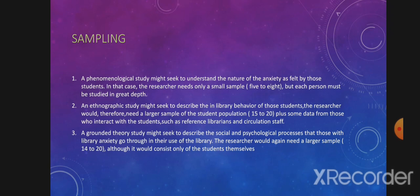Consider the question of library anxiety among doctoral history students. A phenomenological study might seek to understand the nature of the anxiety as felt by those students; in that case, the researcher needs only a small sample of five to eight, but each person must be studied in great depth. An ethnographic study might seek to describe the in-library behavior of those students, requiring a larger sample of 15 to 20 plus data from those who interact with the students, such as reference librarians and circulation staff. A grounded theory study might seek to describe the social and psychological processes that those with library anxiety go through in their use of the library, again requiring a larger sample of 15 to 20, consisting only of the students themselves.